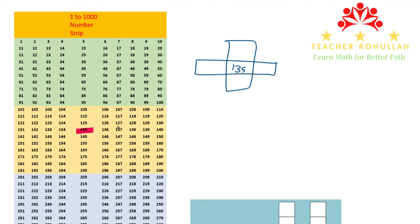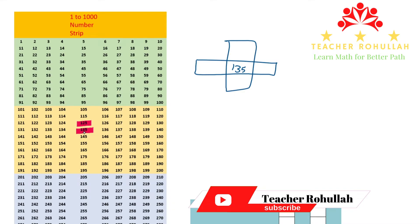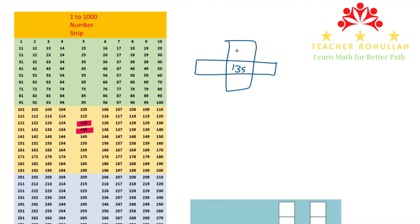135 is here. And we have to look at the numbers to the left of it, to the right of it, above it, and below it. The number above it is 125, and 125 is 10 less than 135, because it is in the row before the row of 135. So the number that comes above 135 is 125.